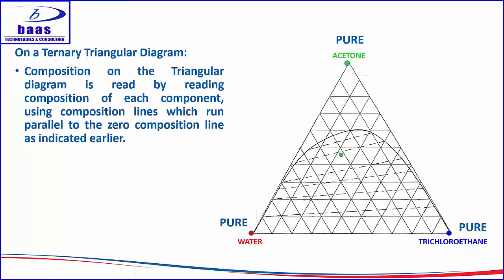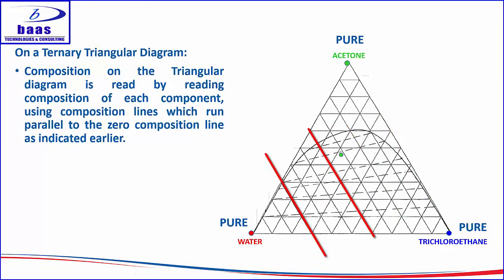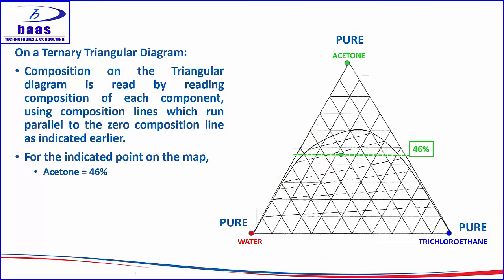The composition on a ternary diagram is read by using composition lines that run parallel to the zero composition line of each component, as indicated earlier. The composition of water starts at zero and increases; if you want to read the composition of water at any point, you use composition lines that run parallel to the zero composition line of water. Let us exemplify that with a point indicated on the diagram. The composition of acetone at this point is read using lines parallel to the zero percent acetone line, which is the water-trichloroethane binary base.